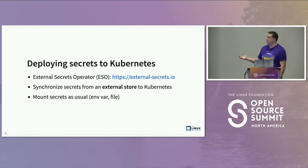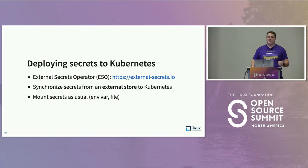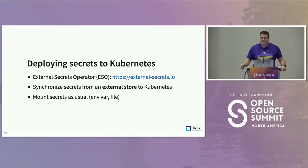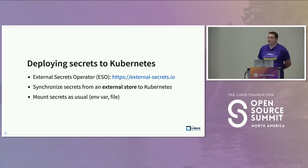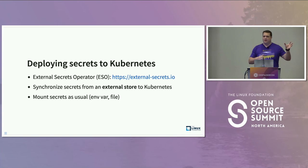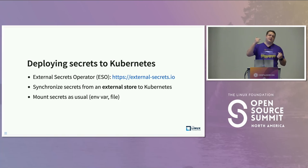So how do we deploy secrets to Kubernetes? Obviously, you can just kubectl apply a secret object to the Kubernetes API. But if you have multiple Kubernetes clusters and multiple environments, that's probably not something you want to do — especially if you have a GitOps workflow where you want to automate the whole secret deployment process. This is where the External Secrets Operator, or just External Secrets, comes into play. It's an operator you can configure through custom resources. It basically synchronizes secrets from an external secret store like HashiCorp Vault or cloud provider-based secret stores to Kubernetes secrets.